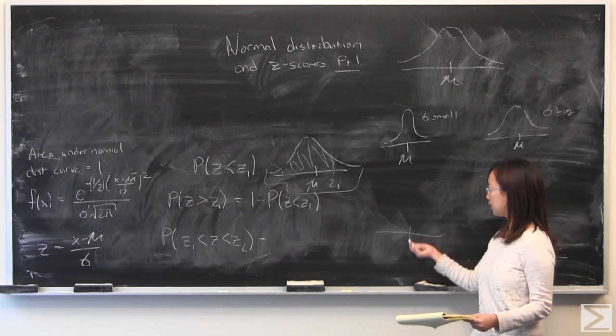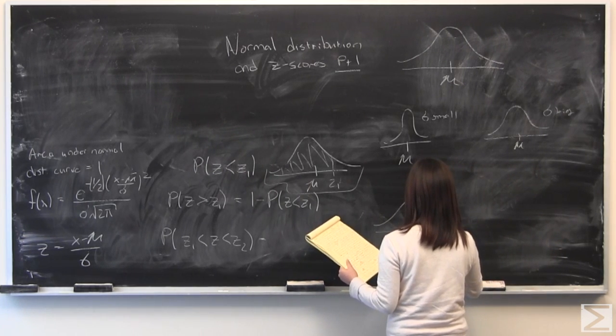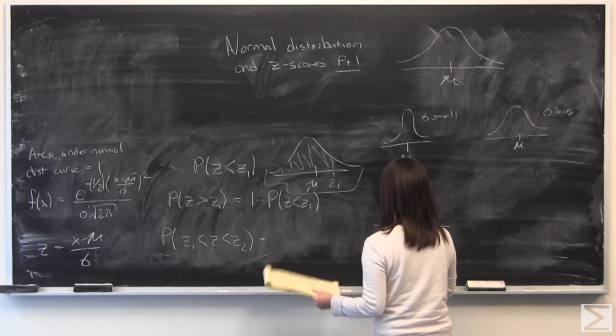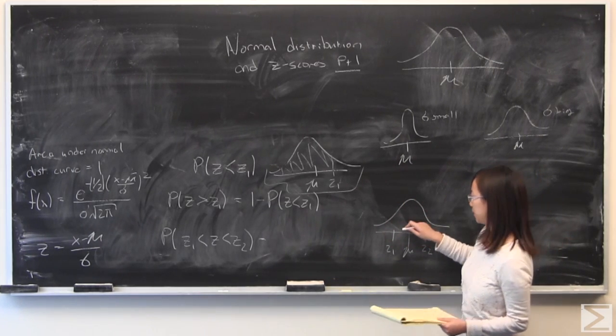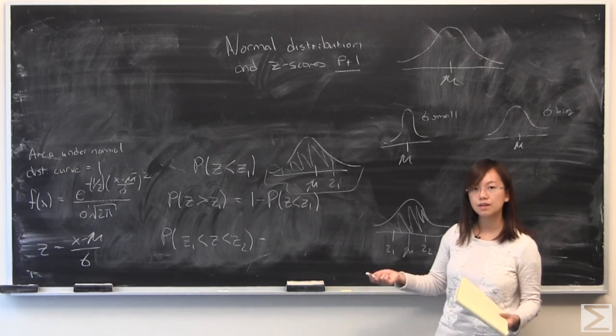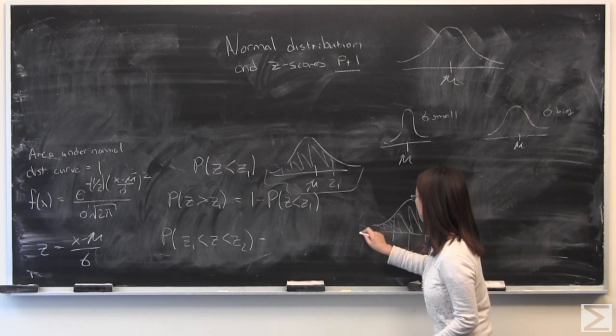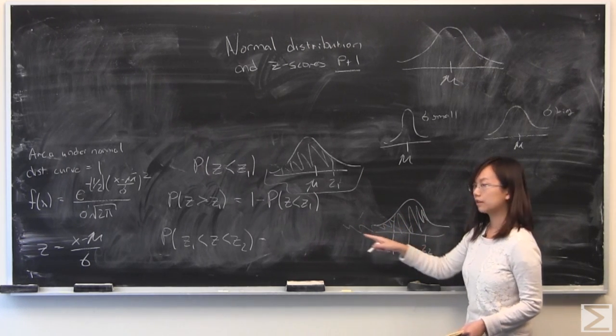And for a similar reason, if you can kind of visualize it, if you want to find the value between these two, and you're able to use some kind of z-table or calculator to find z1 from here to negative infinity and z2,